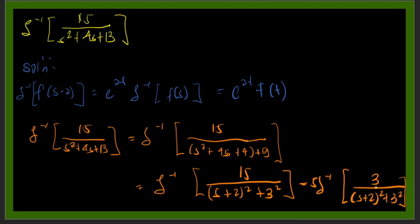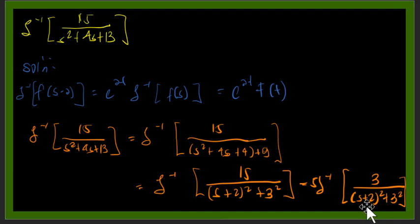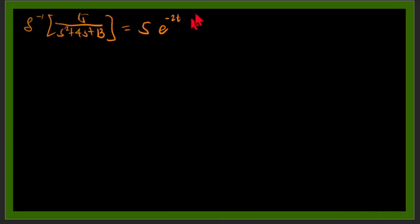Now this one, this will be our S minus A, but as you can see, this is S plus A, so we could say that our A here is negative 2. So we'll have a final answer of the Laplace transform of 15 over S squared plus 4S plus 13 is equal to 5, then we have e raised to the power of AT, where our A equals negative 2. So we have e negative 2T, then we have sine 3T.